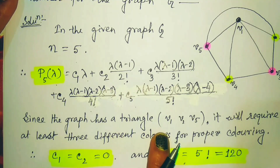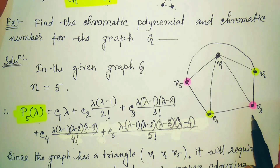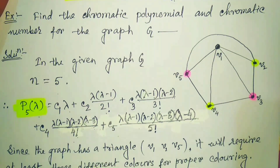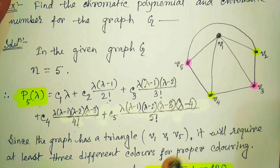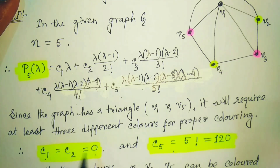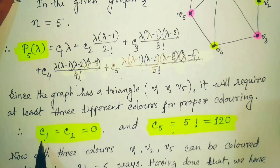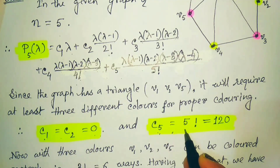Since the graph has a triangle formed by vertices V1, V2, and V5, it will require at least 3 different colors for proper coloring. If a triangle is formed, it definitely requires 3 colors, so C1 and C2 should both be 0, because 1 or 2 colors are not sufficient. So accordingly, C1 = 0 and C2 = 0. And since the total number of vertices is 5, C5 is always 5! = 120.